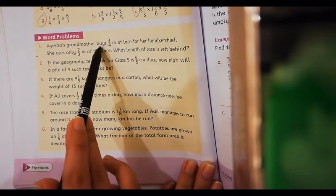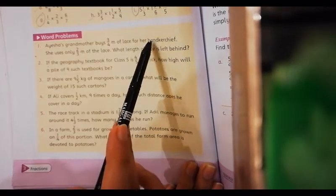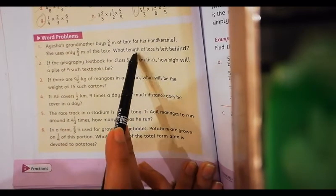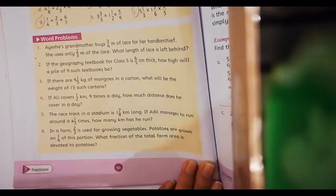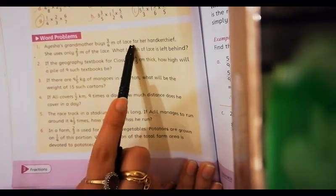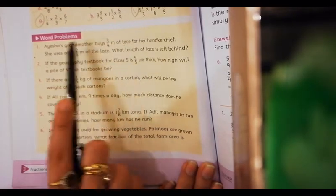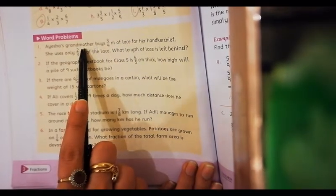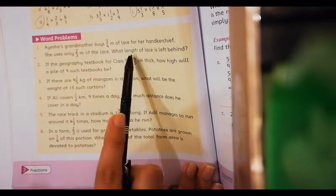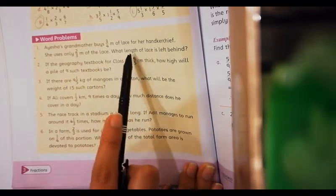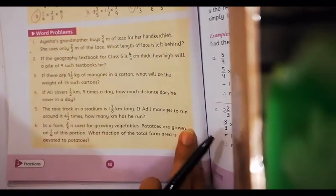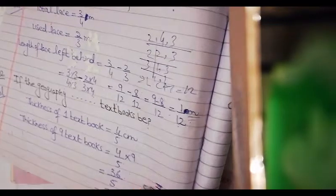Question number one is Aisha's grandmother buys 3/4 meter of glass for her handkerchief. She uses only 2/3 meter of the glass. What length of glass is left behind? First of all, what is given? 3/4 meter glass is given by Aisha's grandmother for her handkerchief. She used 2/3 meter glass. What do I need to do? I need to find what length of glass is left behind. So you simply need to subtract these two values.